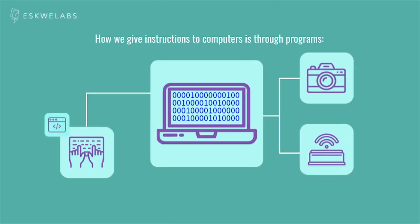Once a program is written and the instructions are ready, computers can also interact with and control other devices like cameras, printers, and sensors. Through our programs we can tell the computer to take a picture, to open a website, to print something. They can also be programmed to do these things when some event is sensed by a sensor. For example, we can connect our computer to a motion sensor and a camera, and the program can take a picture when the sensor detects motion.